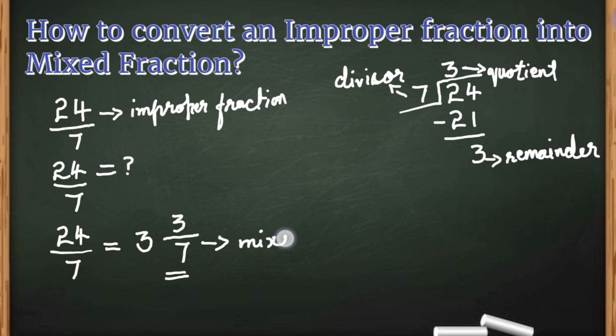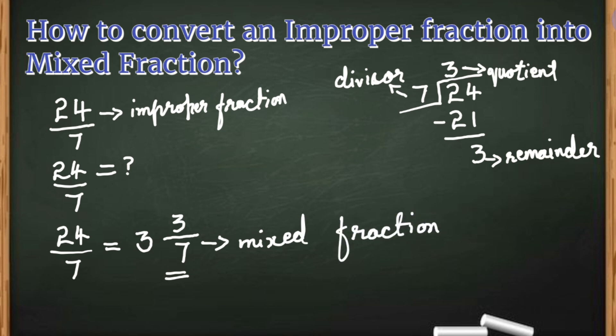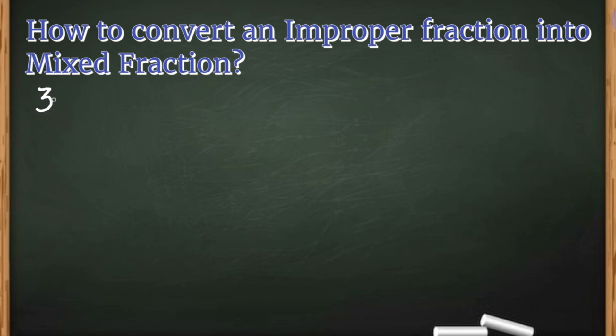For the denominator we write the divisor, which is 7. So we have converted the improper fraction 24 by 7 into the mixed fraction 3 and 3 by 7.